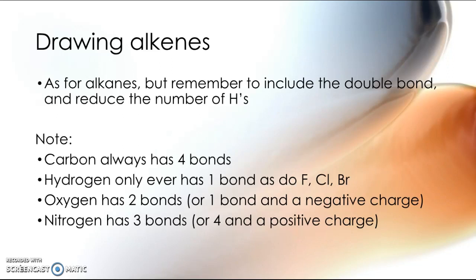Whenever we're drawing molecules, it doesn't matter what sort of molecule we're drawing, it's always important to remember that carbon will have four bonds, hydrogen will only ever have one bond, so will fluorine, chlorine and bromine. If you ever draw a hydrogen that has two bonds on it, your molecule is wrong. If you have a carbon that has three or five bonds, it is wrong.